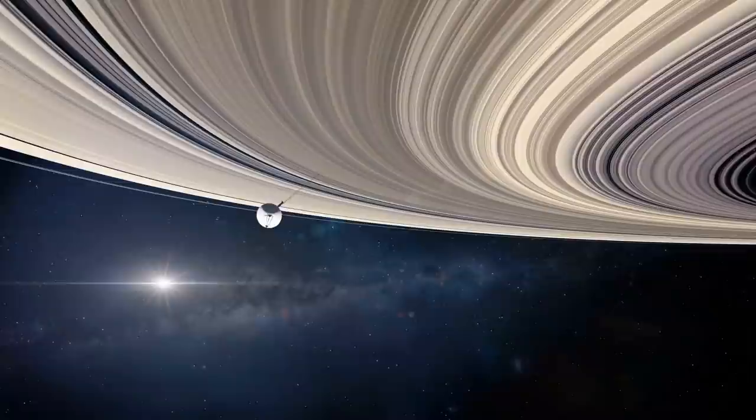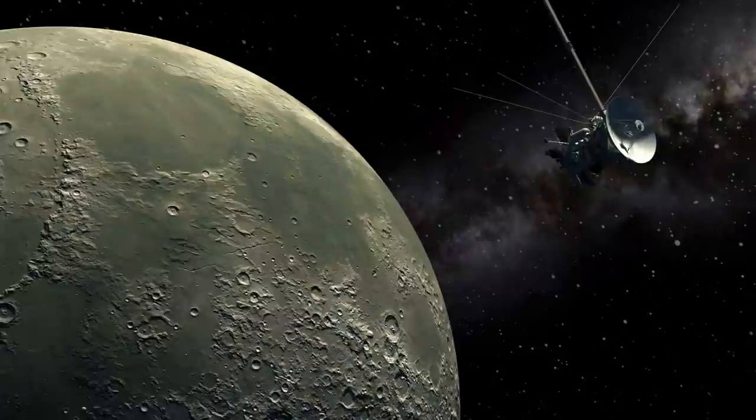Voyager 2 was the first man-made object to fly around Uranus, and there it discovered 10 new moons and two rings surrounding it. It also found five moons, four rings, and a great dark spot on Neptune.